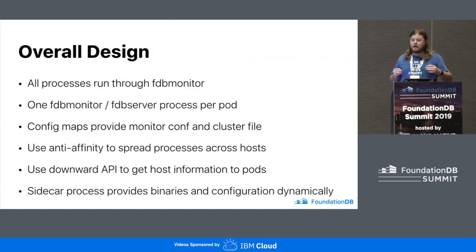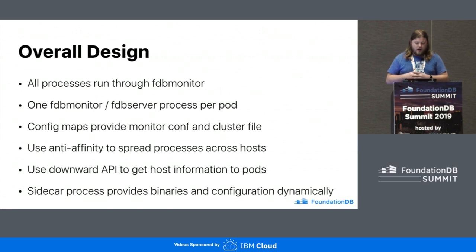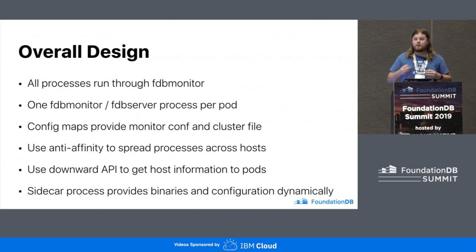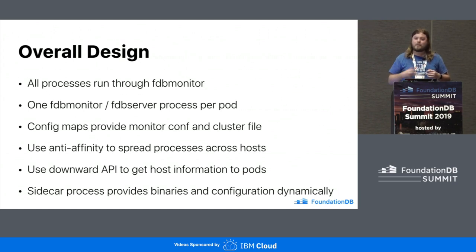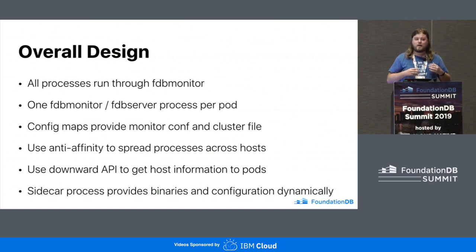Some overall design principles: we run all of our FDB processes through FDB Monitor, which is a process launcher that ships with FDB. We run one FDB server process for each FDB Monitor process, and we use config maps in Kubernetes to provide the monitor conf and the cluster file. Config maps are a really great tool for this because they allow us to update these files dynamically without having to bounce the pod. We also use anti-affinity to get Kubernetes to spread processes across hosts, and we trust Kubernetes to do the scheduling properly and give us the diversity we need.